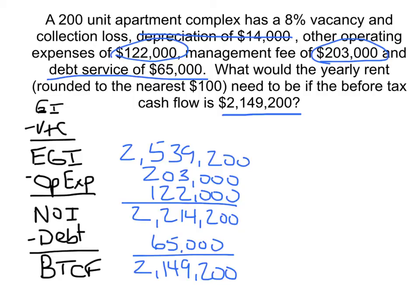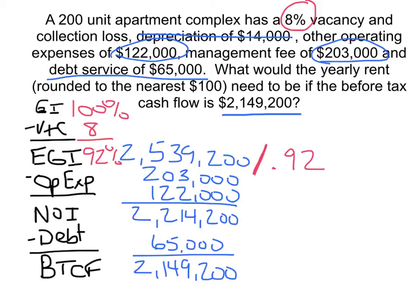This is where it gets a little tricky, because we're having to calculate vacancy and collection and we have a percentage amount. We have to recognize that gross income is 100% of what we need. Vacancy and collection is 8%, so effective gross income is 92% of the total. If we divide our effective gross income of $2,539,200 by 92%, we get a gross income of $2,760,000.